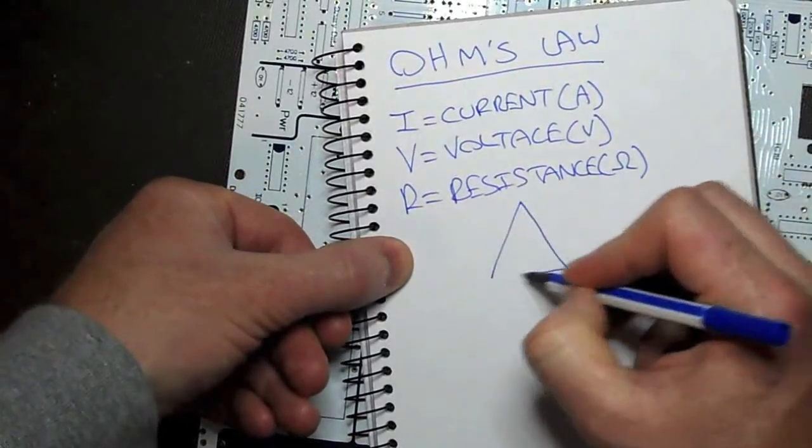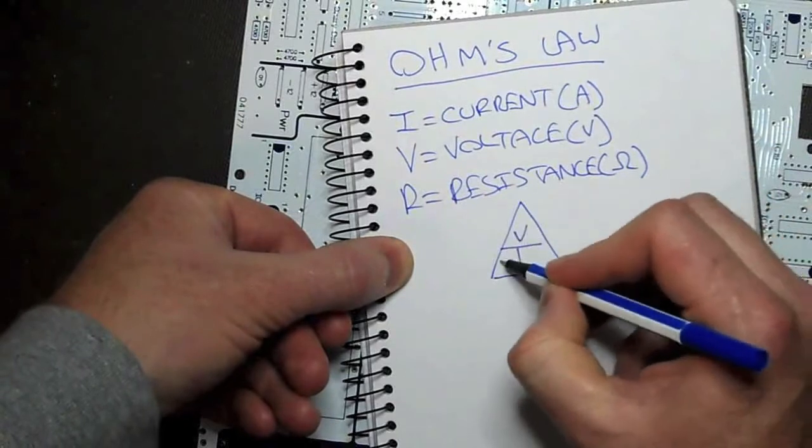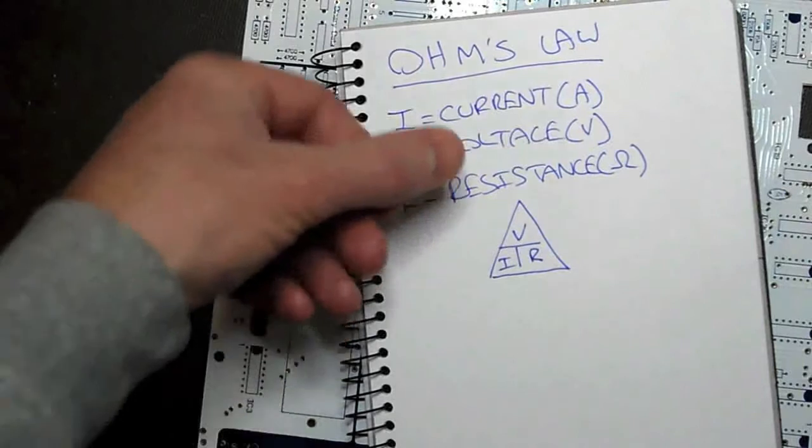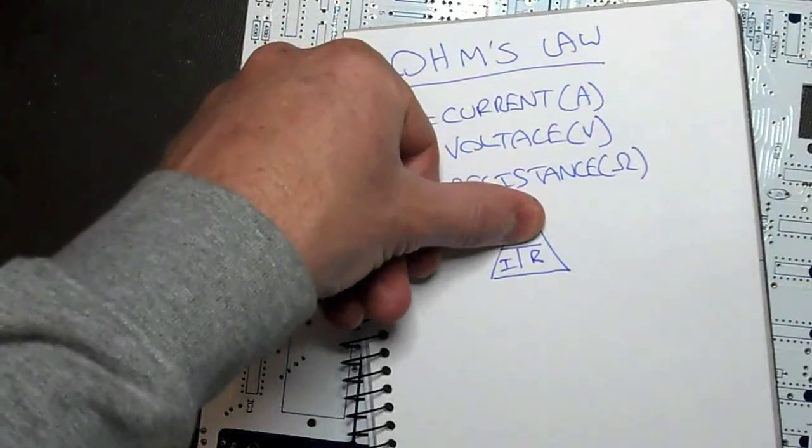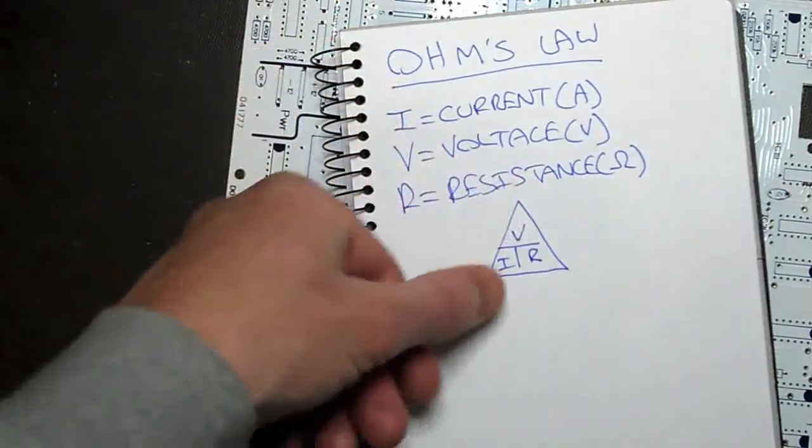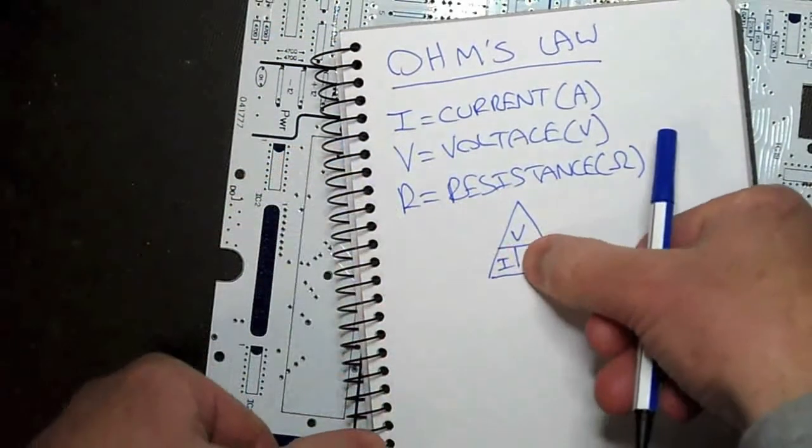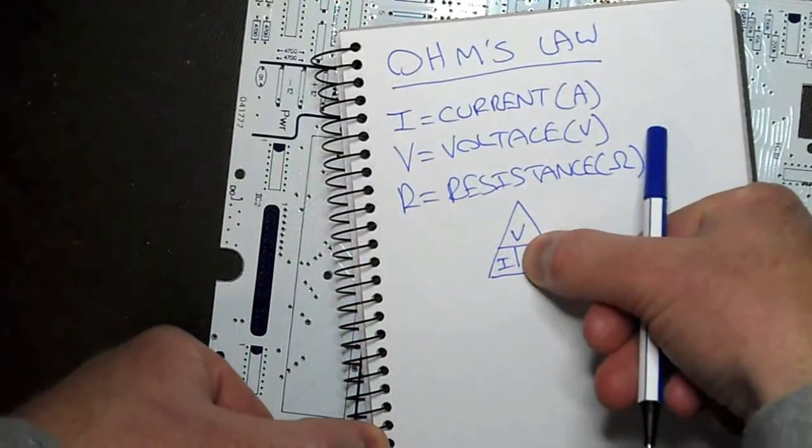It's nicely summed up by this triangle. V, I, R. So, voltage is current times resistance. Current is voltage divided by resistance. Resistance is voltage divided by current.